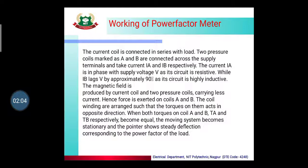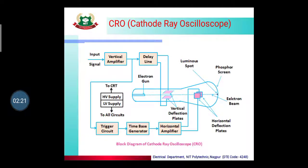When both torques on coil A and B become equal, the moving system becomes stationary and the pointer shows steady deflection corresponding to the power factor of the load. So this is the power factor meter.